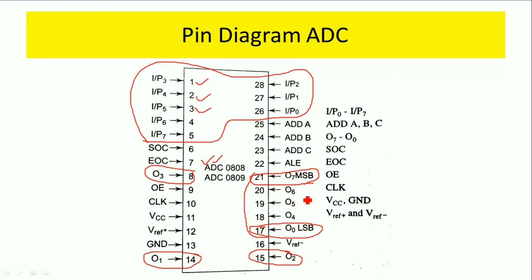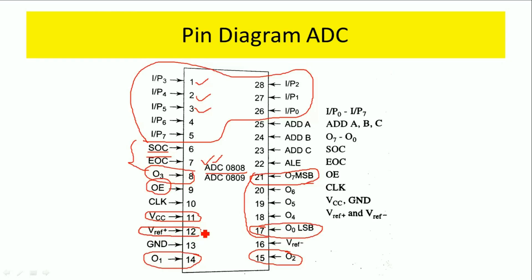SOC and EOC are nothing but Start of Conversion and End of Conversion. When the ADC receives the SOC signal, it starts converting analog to digital information. After conversion, it sends the EOC signal indicating end of conversion. Output Enable is used for enabling the ADC 0808. VCC is plus 5 volts. The ADC requires a reference voltage given to pin 12, and pin 13 is ground. V reference minus on pin 16 is generally grounded.